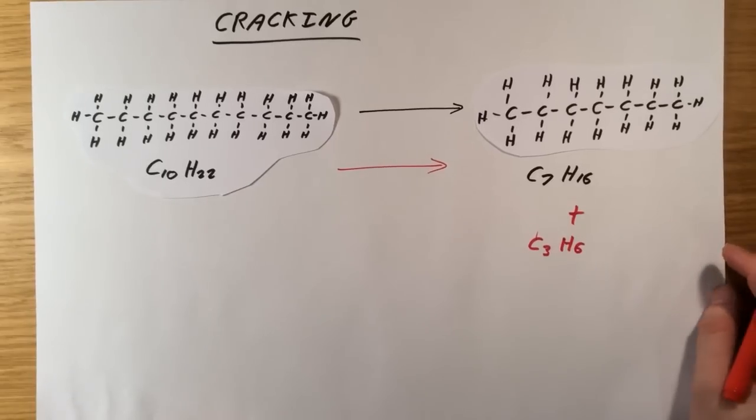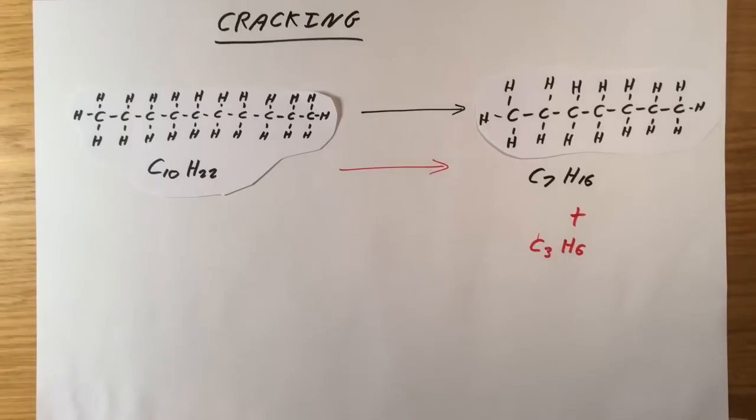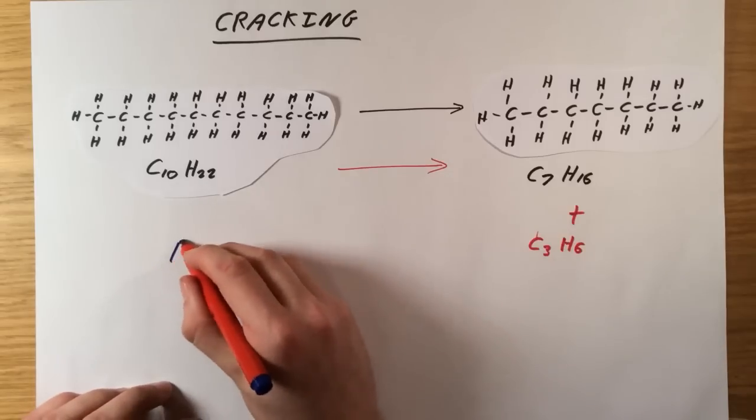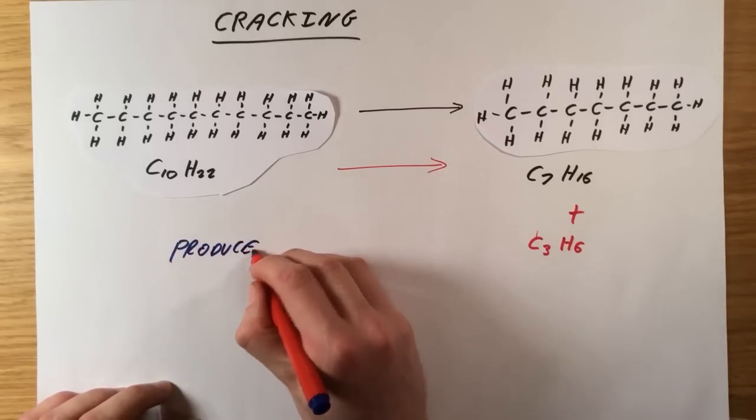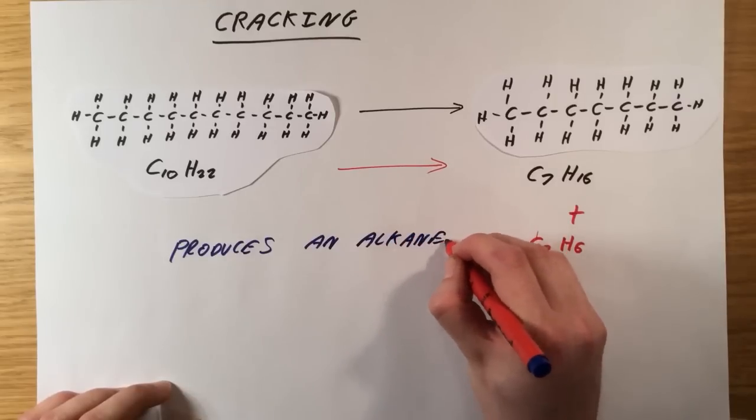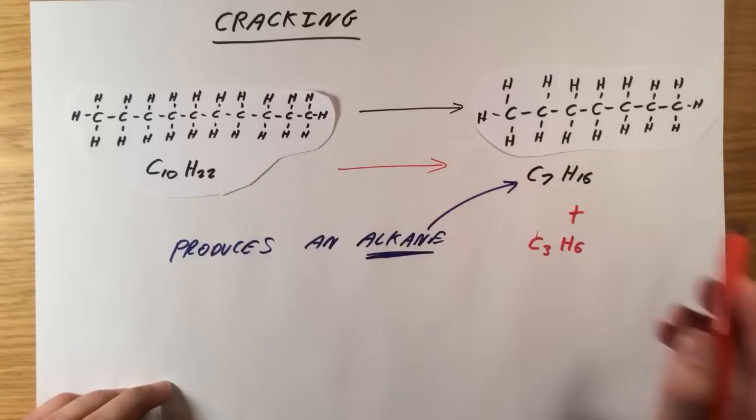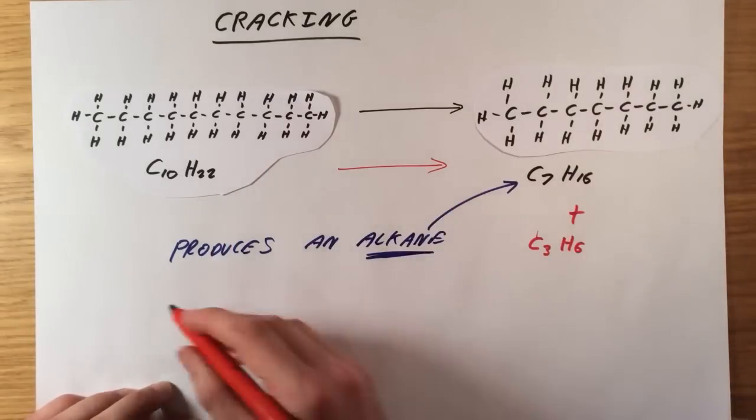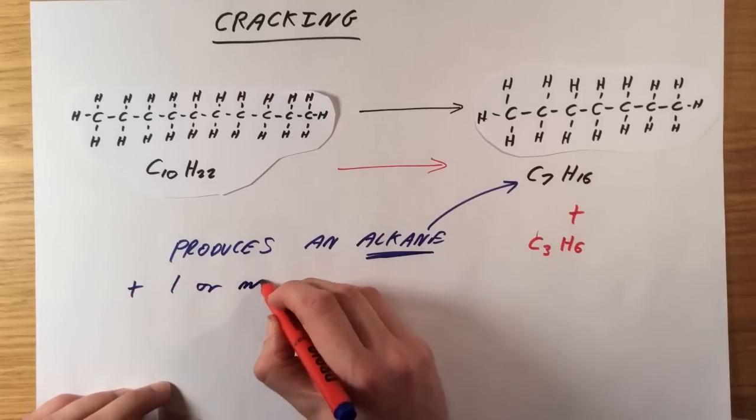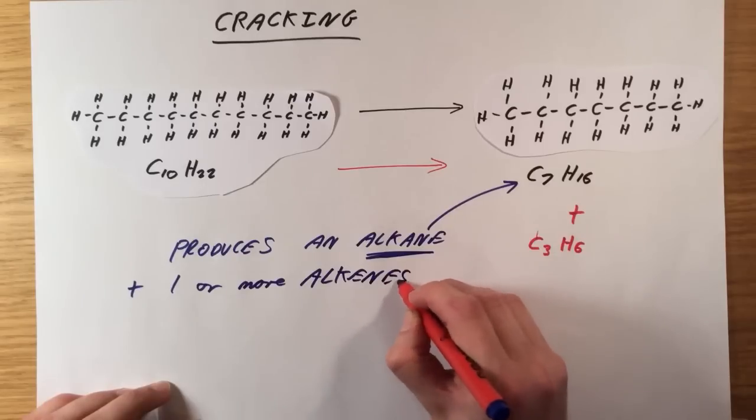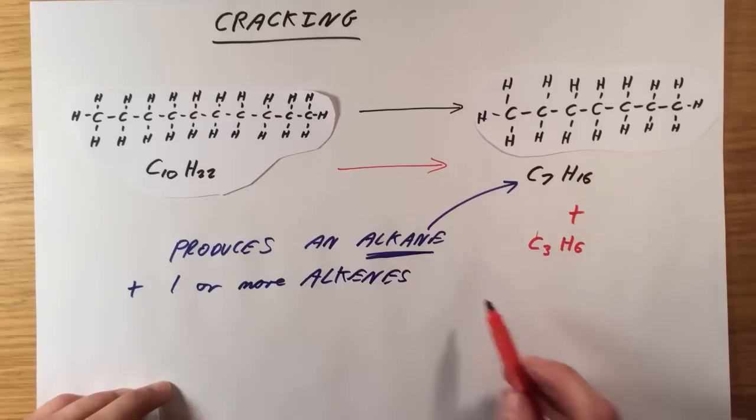So if you have looked at the video on general formulae, what you should spot is that our first product here is an alkane. And our second product is actually an alkene. So cracking always produces an alkane. And since this alkane is shorter than the one we started with, it is going to be more flammable and therefore more useful as a fuel than the one we started with. And you also always get one or more alkenes, which in this case is this one here.